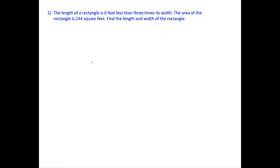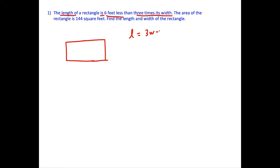For the first question, take a second to read through this. We should first draw out a rectangle and label it carefully. We're told that the length of the rectangle — length is L — is six feet less than three times the width, which gives us L equals 3W minus 6. Be careful not to say six minus three W; six feet less means minus six at the end. We're also told the area is 144 square feet, and we want to find the length and width.